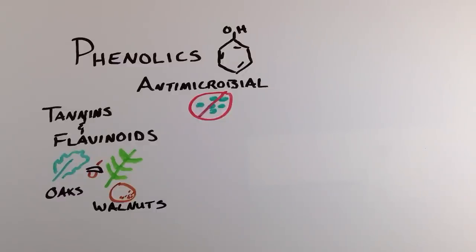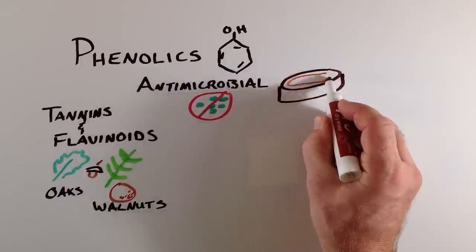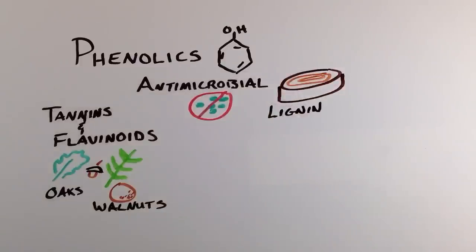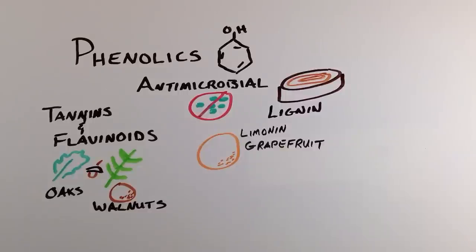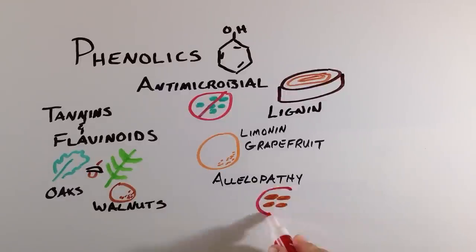Other phenolics are synthesized into lignin as the primary constituent of wood. This makes plant tissues harder to chew and digest, another example of the relationship between chemical and mechanical defenses. Likewise, limonin is a crystal that is found in grapefruit rinds that gives it a very strong bitter flavor. Phenolics can also be used for allelopathy which doesn't protect against herbivores but can prevent the germination of seeds from other species, yet another type of defense for plants.